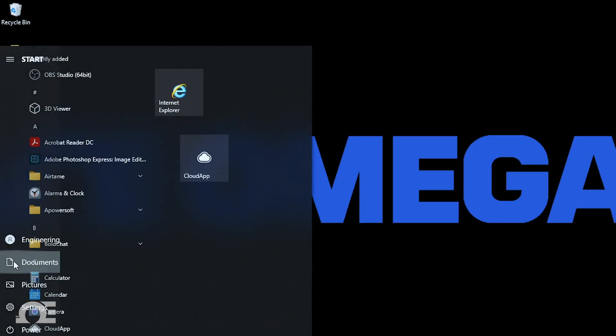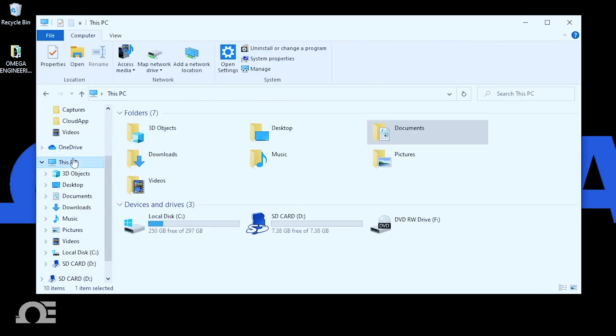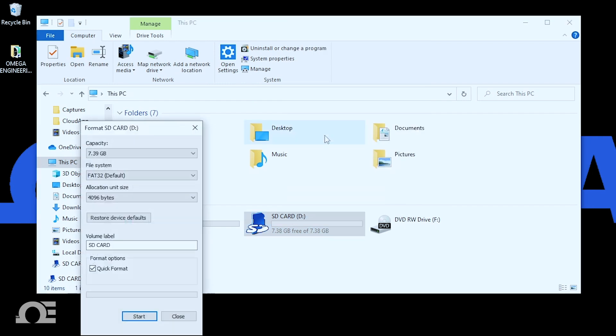With the card connected, locate it under This PC, select the drive, right-click, select format, restore device default, making sure file system is FAT32 and quick format is selected, and then start.